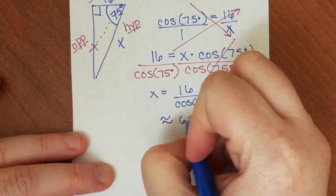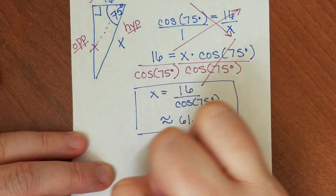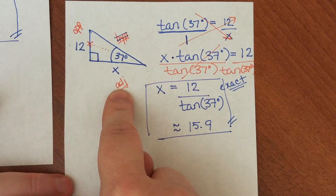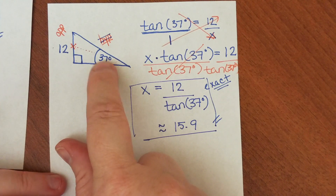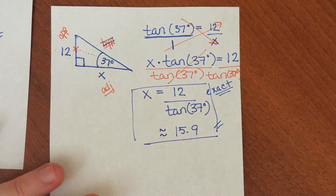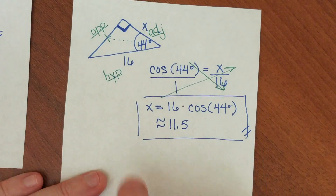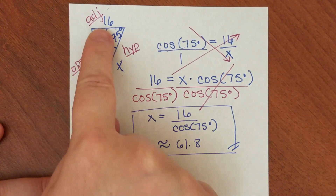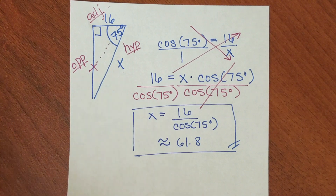Taking a quick look at the problems we did today — always start by labeling your angles. See which two sides they give you with respect to the angle, then choose the right trig function. The first example used tangent because we had the opposite side and the adjacent side. The second used cosine because they gave us the adjacent and the hypotenuse. The third used sine because they gave us the opposite side and the hypotenuse. And the last one used cosine again with the adjacent side and the hypotenuse. From there, just turn it into a proportion, cross-multiply, and solve. I hope this helps. Happy studying!